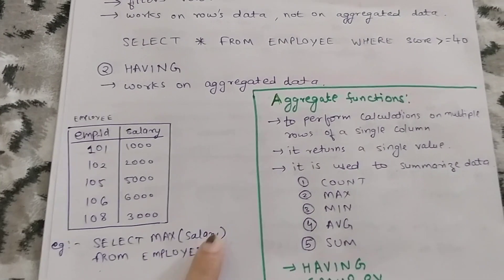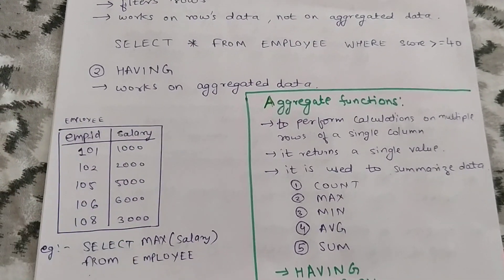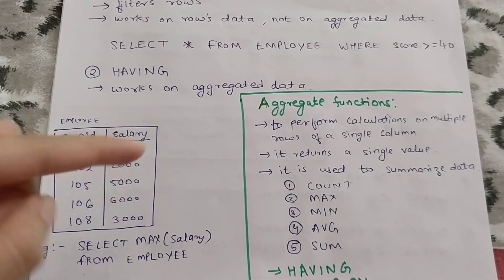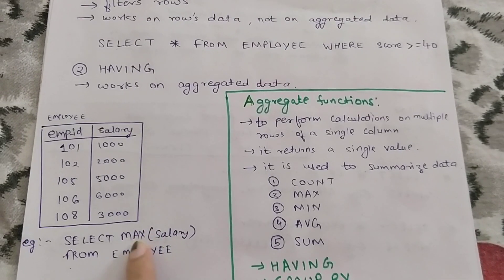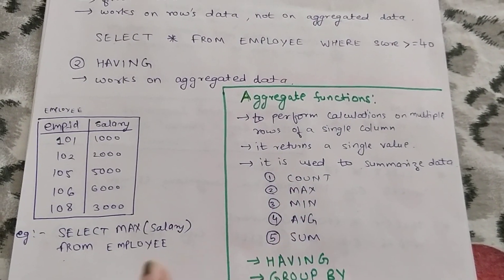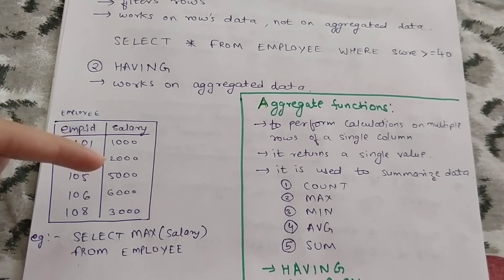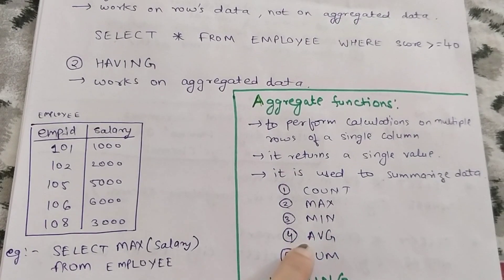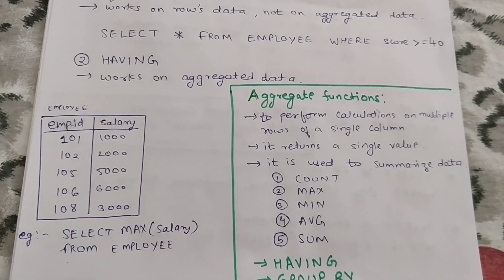An example of an aggregate function would be: SELECT MAX(salary) FROM employee. This query selects the maximum salary from the employee table. The query is performed on multiple rows of a single column, and it will find out the maximum salary. Similarly, COUNT, MIN, AVERAGE, and SUM can also be performed. For COUNT, if we write SELECT COUNT(salary) FROM employee, it will count the number of salaries — one, two, three, four, five — so it will return five. And AVERAGE will find the average of the multiple rows in this column.